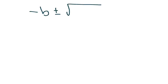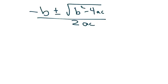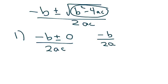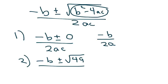Let me explain why this works. The quadratic formula is negative b plus or minus the square root of b² minus 4ac, all over 2a. If the discriminant equals 0, you have negative b plus or minus 0 over 2a, which gives just one solution: negative b over 2a. If the discriminant is positive — say it's 49 — then you take the square root and get 7, giving two distinct solutions: negative b plus 7 over 2a, and negative b minus 7 over 2a.